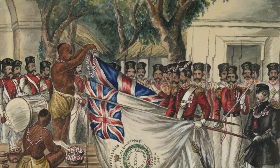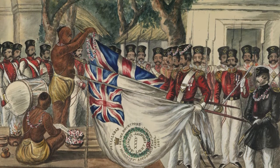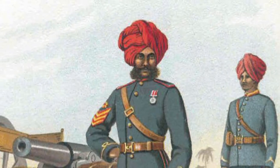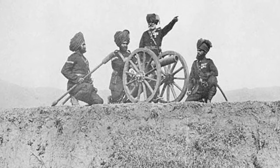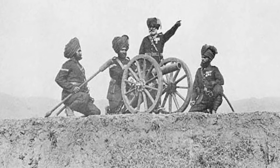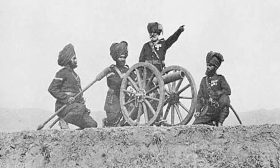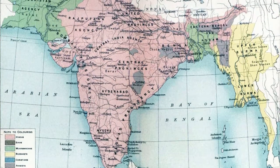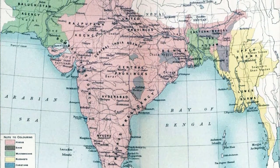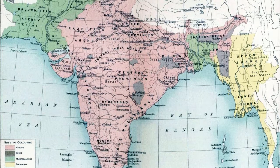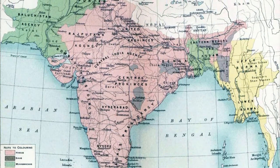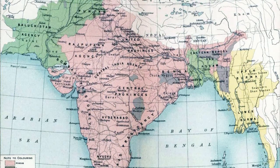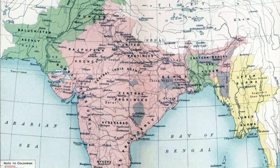The Indian army was also reorganised as Britain wanted to avoid any further mutinies in the ranks. At the time, the Indian army was made up of three branches — the Bengal, Madras and Bombay armies, which later formally merged in 1895 into the British Indian army. In their reorganisation after the rebellion had been suppressed, British officials implemented the tactic of divide and rule in an attempt to prevent any further mutinies.